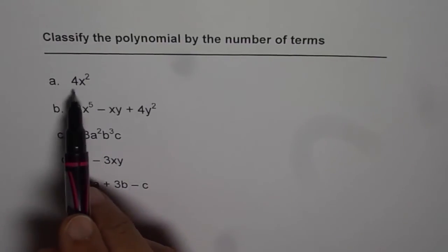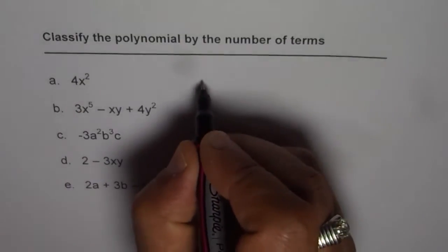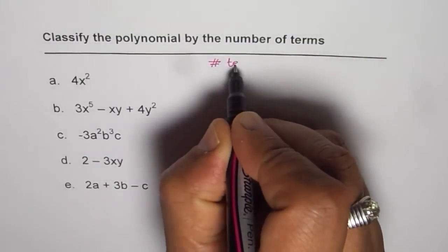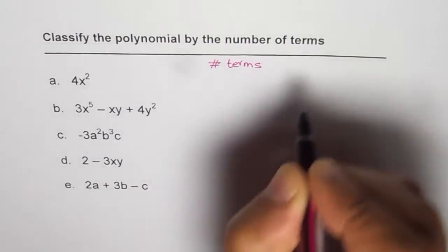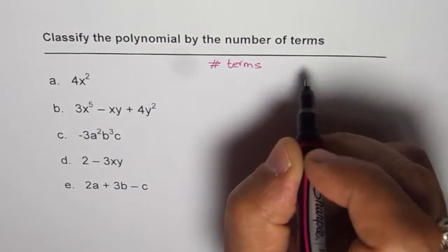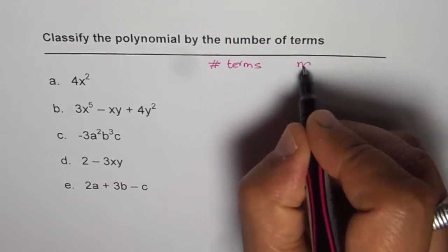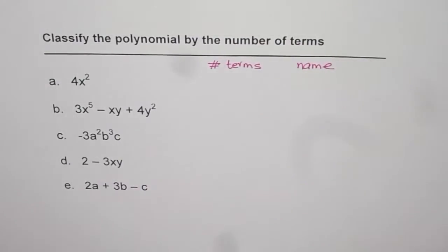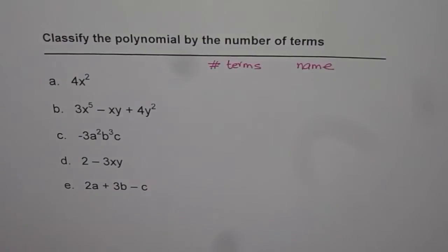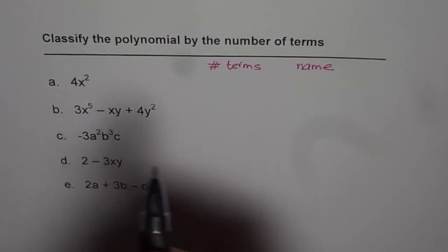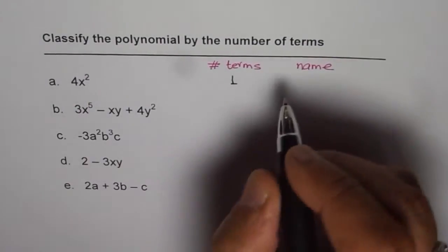The first one has only one term, 4x squared. So it's a number of terms. Let me write down here number of terms, and then we'll try to give it a name. So based on number of terms, polynomials have a particular name also. We have specific names especially when the number of terms are 1, 2, or 3. In this case, the number of terms is just 1 and the name is monomial.